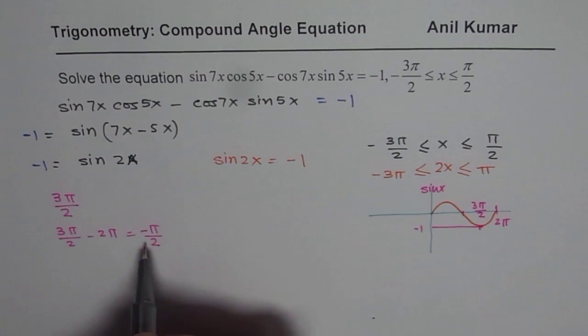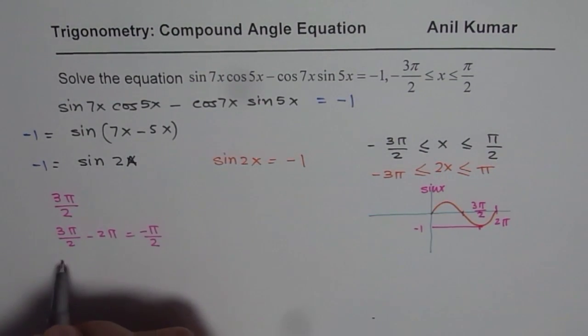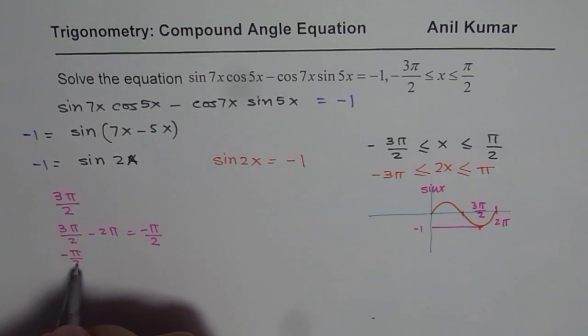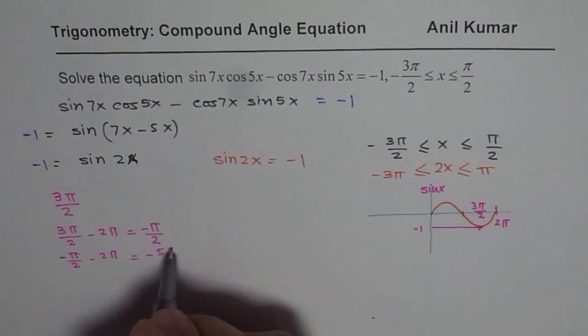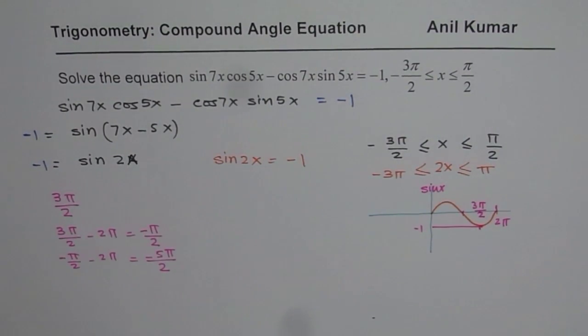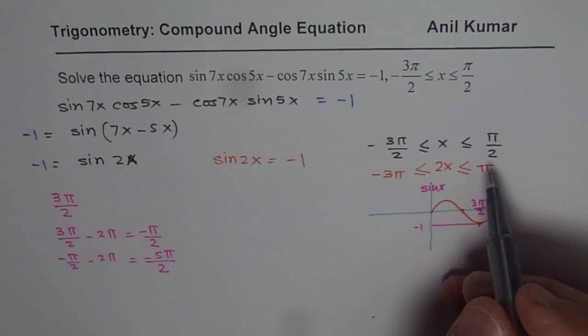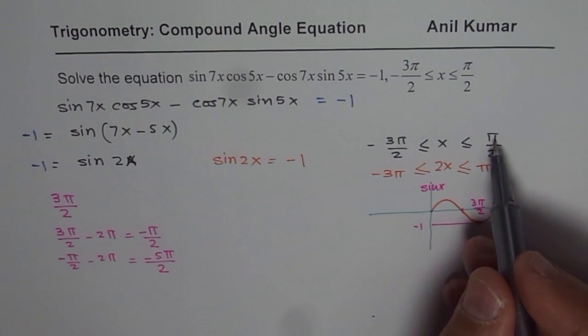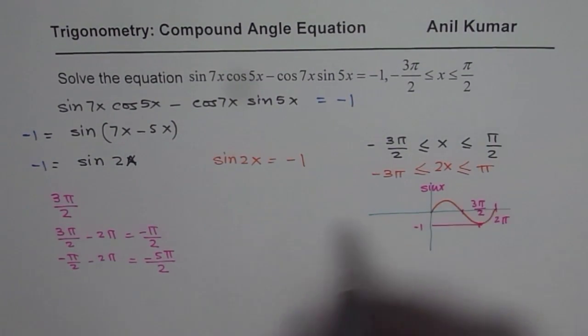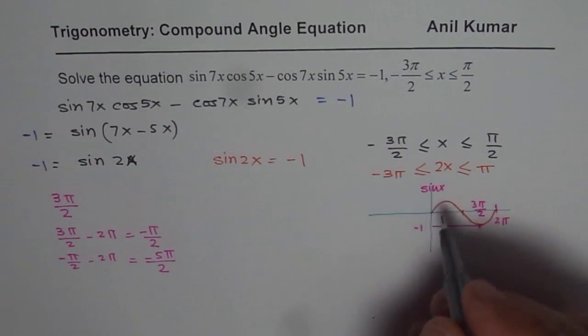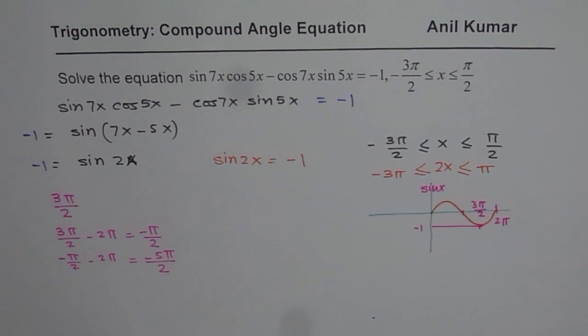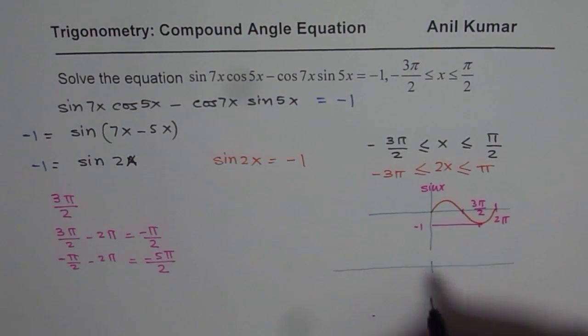That gives us times 2 is 4 pi, so minus pi by 2. And then we can try one more cycle. We say minus pi by 2 minus 2 pi. That gives you 2 times 2 is 4 minus 5 pi by 2.